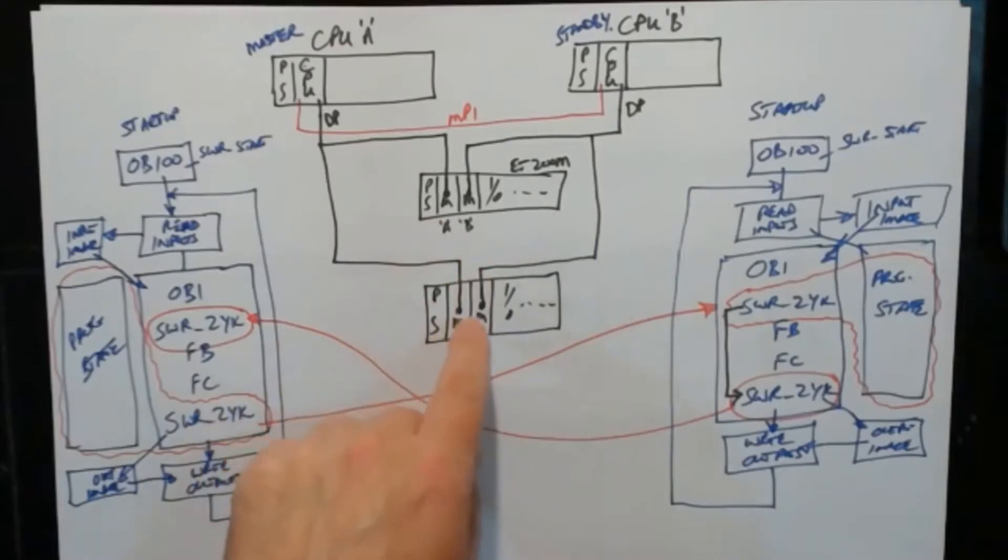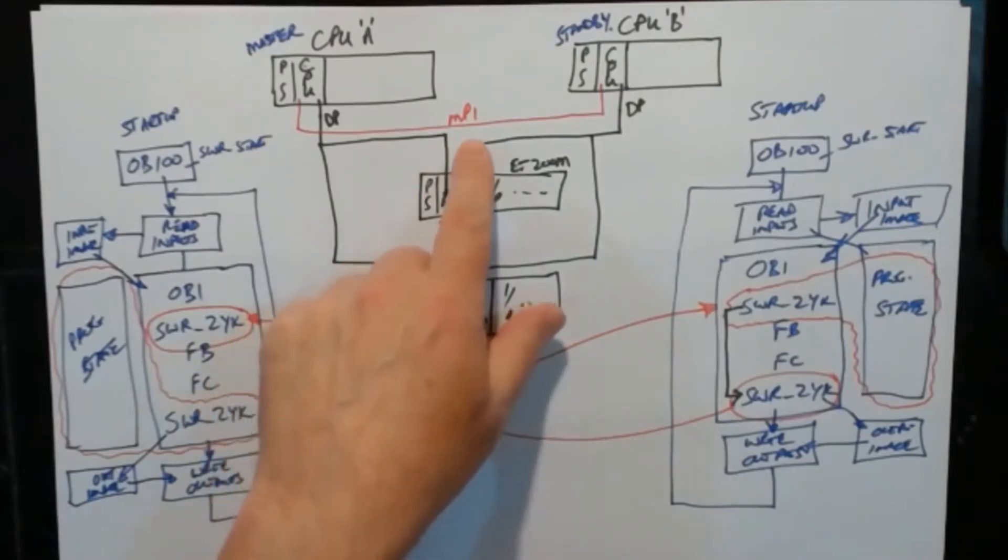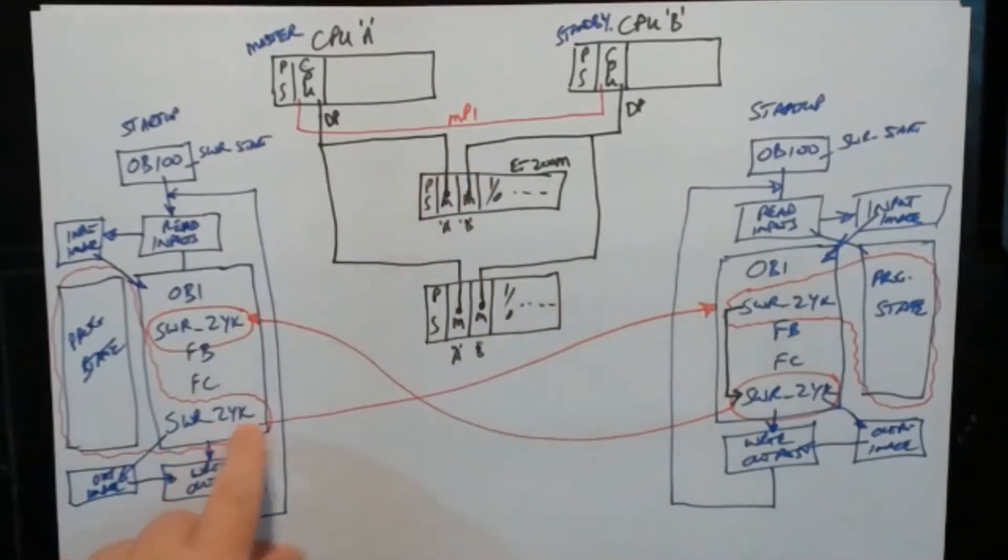One of the other bottlenecks is this MPI connection. All this information has to go over MPI and MPI's maximum speed is 187.5 kilobits per second.